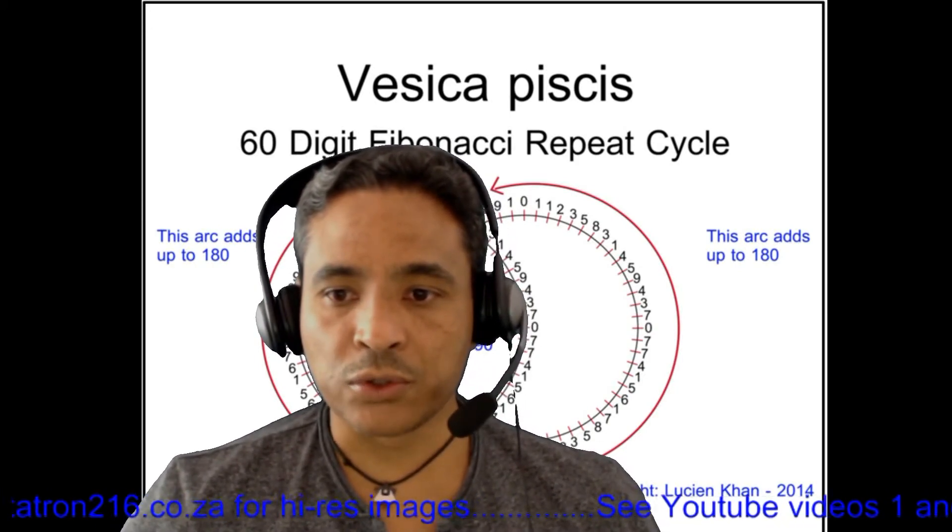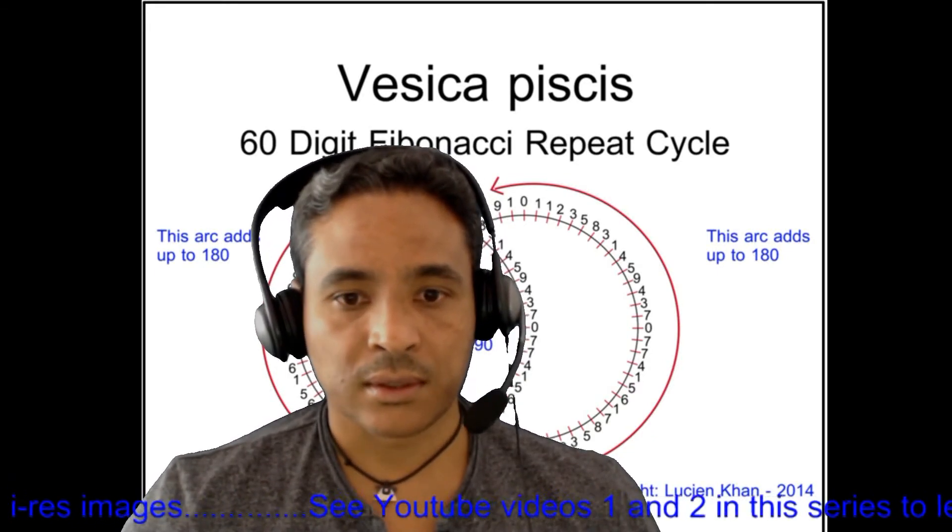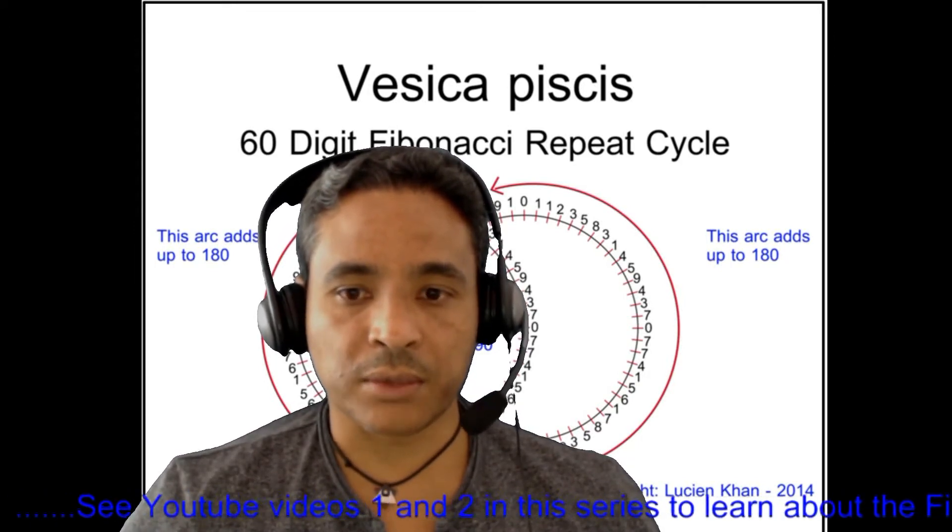We just happened to use units of 60 and 360 on our clocks and compasses. 60 represents time and 360 represents space.